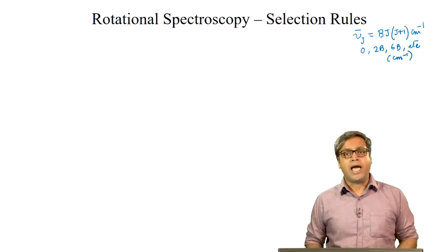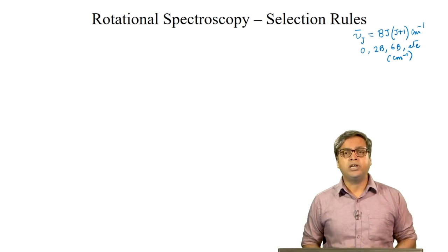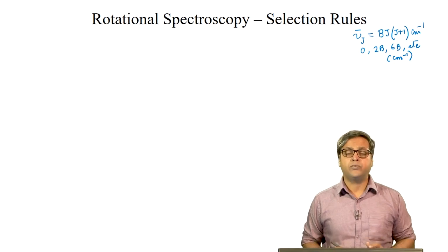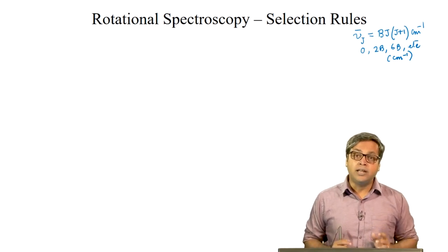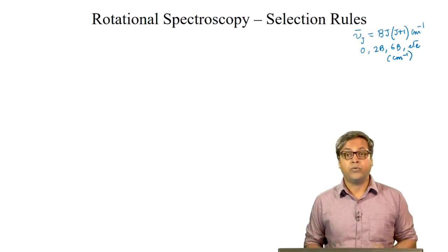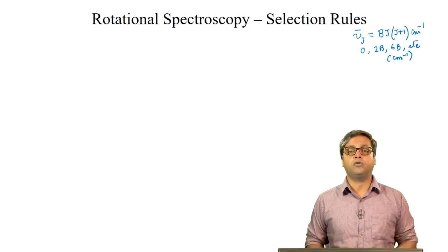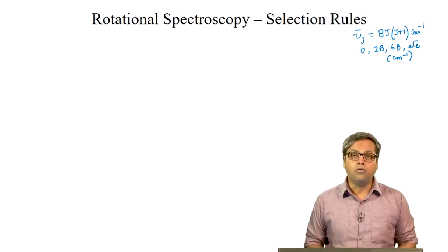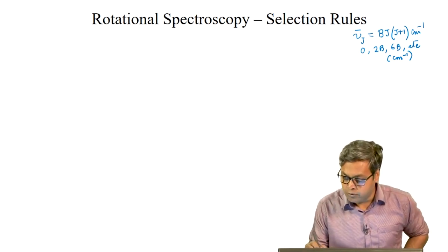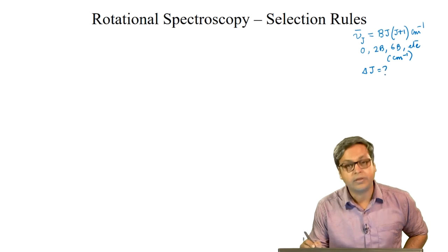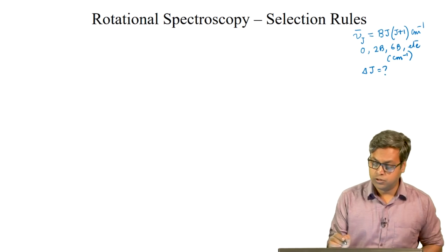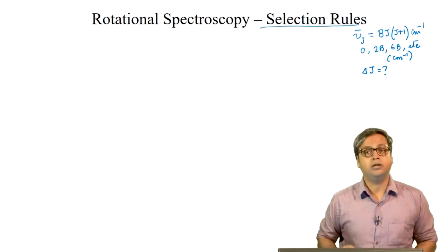We can only get a rotational spectrum when a transition happens. We have to ask between which levels the transition can take place — in other words, what change in rotational quantum number is allowed, or what is the allowed value of ΔJ? To answer this, we need to know the selection rules of rotational spectroscopy.